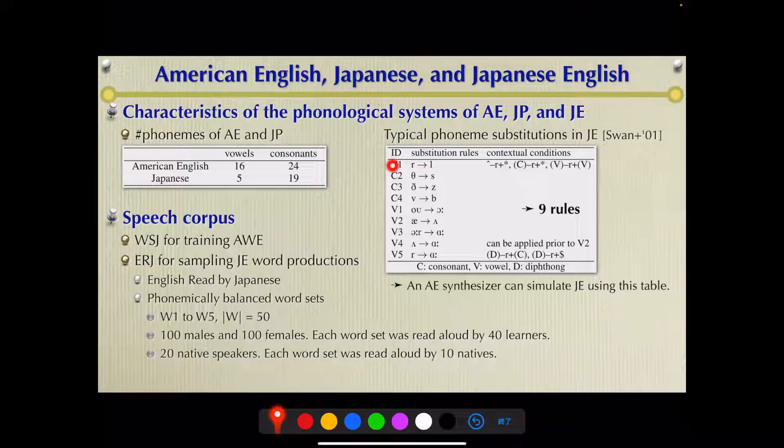In Japanese, L and R sounds are perceived as identical, and because Japanese has only five vowels, some American English vowels are merged. Using these rules, we can simulate Japanese English word productions using an American English speech synthesizer.